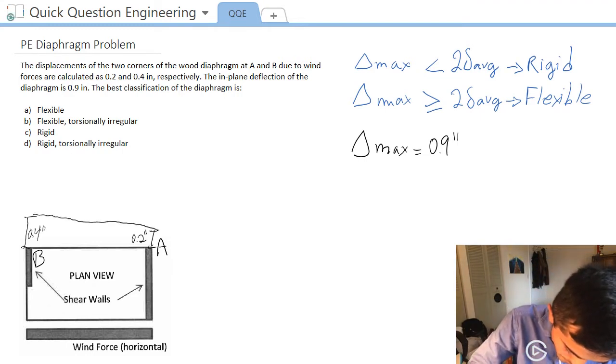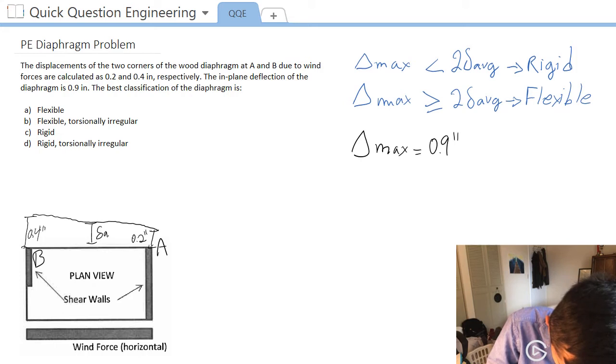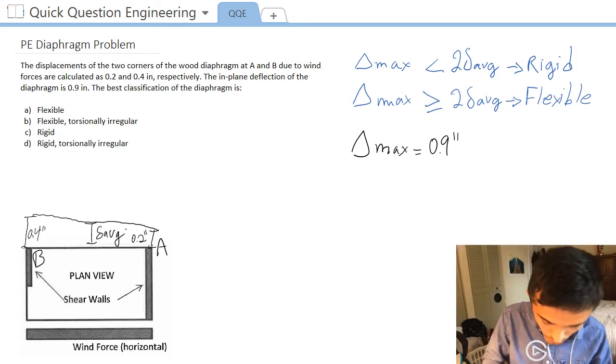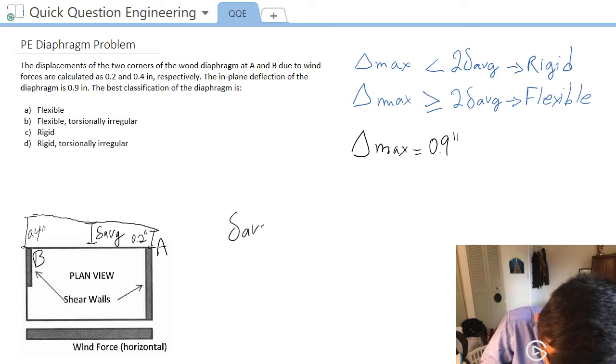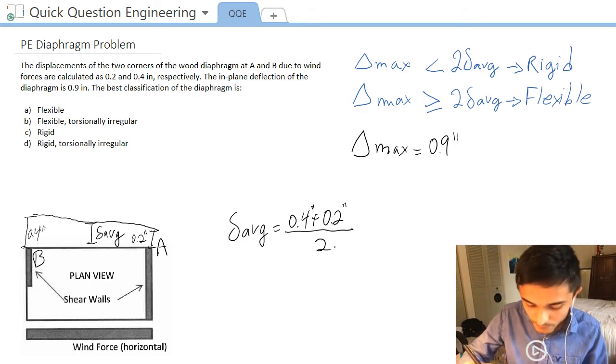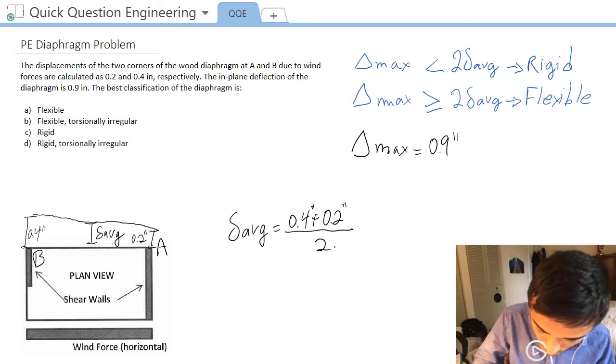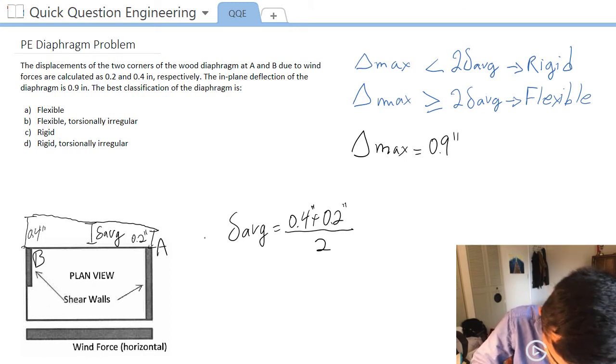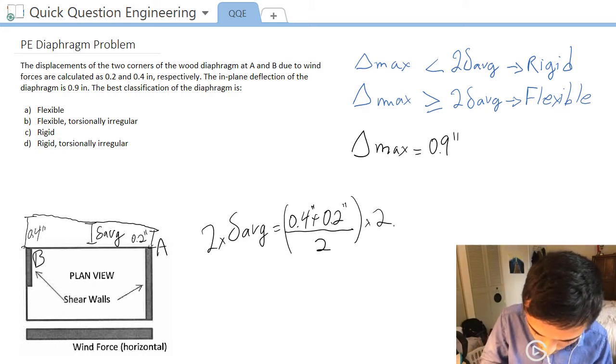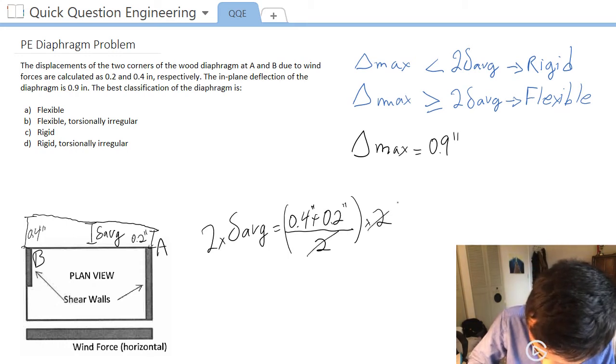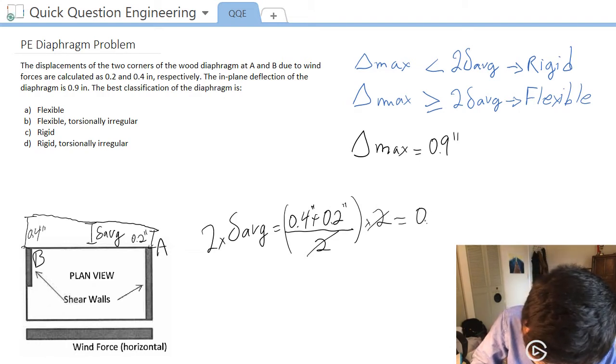So if we draw a line, this should be a straight line, this would be my average right here. And we know that our delta average is equal to 0.4 plus 0.2 inches divided by two. Now, what is two times delta average? So if I just slap on two times here, and two on the other side, I know that two times my average story drift will be, cancel, cancel, it will be equal to 0.6 inches.